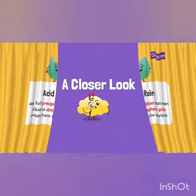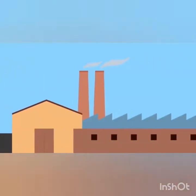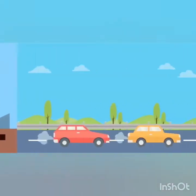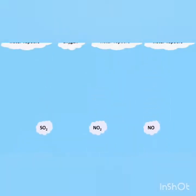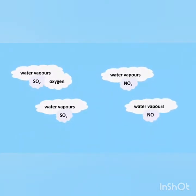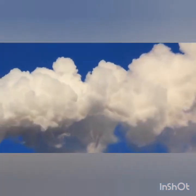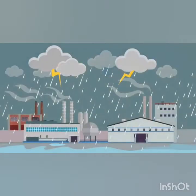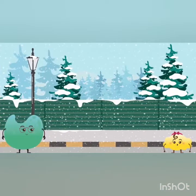Humans burn fossil fuels on a large scale to produce electricity and other industrial products. Fuel is also used in automobiles. Burning fossil fuels emits gases like sulfur dioxide and nitrogen oxides. These gases combine with water vapors, oxygen, and other chemicals in the atmosphere to form solutions of sulfuric acid and nitric acid. The wind can spread these gases across hundreds of miles, resulting in acid rain falling as rainfall, hail, or snowfall.